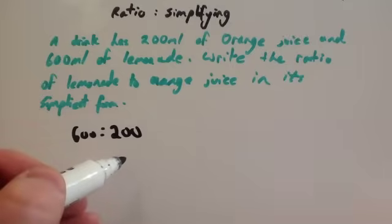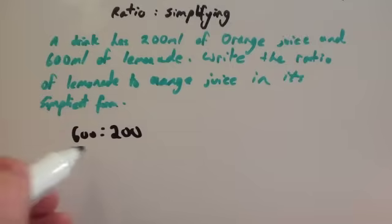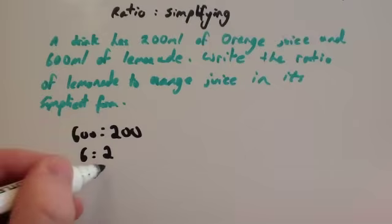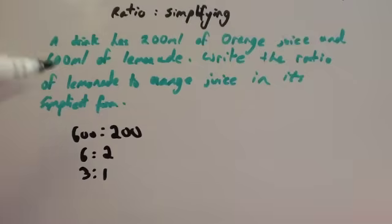So we've got 600 and 200. Let's divide both of these by 100. If we divide both of these by 100, you would get 6 to 2. And then you could divide both of these by 2 and you would get 3 to 1. So the ratio of lemonade to orange juice is 3 to 1.